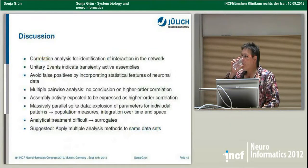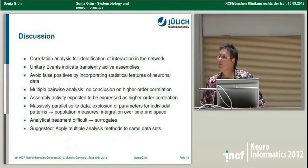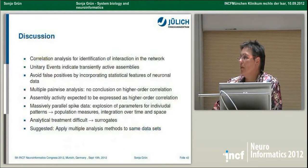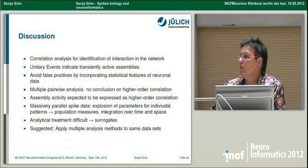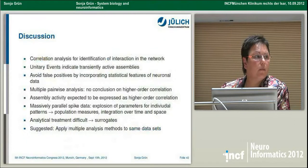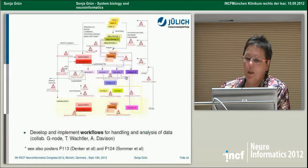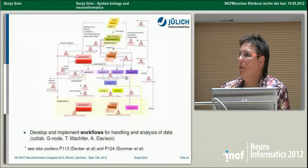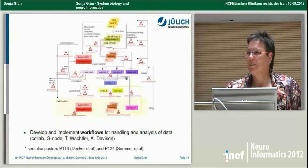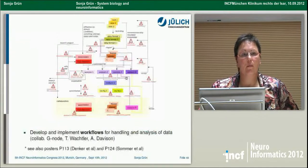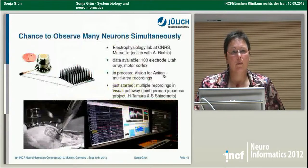Question from the audience about workflow engines and provenance tracking: we are trying to use Sumatra but are not sure yet whether it will work for our applications. It was mentioned that among commonly available workflow engines, Kepler has the most sophisticated provenance tracking. We have Kepler on our list to check.